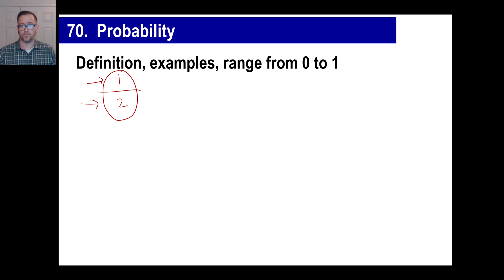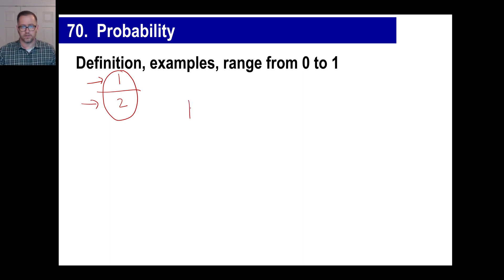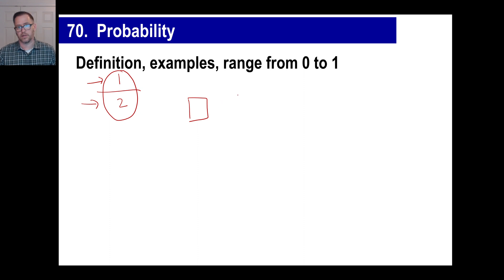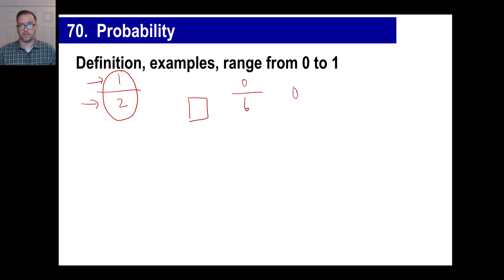Probability can range from zero to one. For instance, what are the odds that you take a normal die and roll a seven? Well, there's only one through six on that die. There are zero chances of rolling a seven out of six possible outcomes, so zero divided by six is still zero. That's your probability.